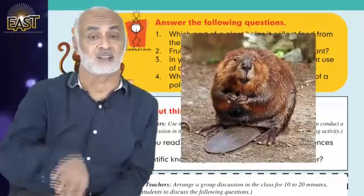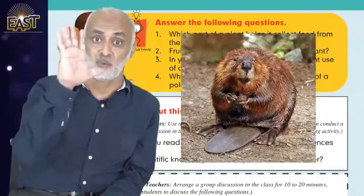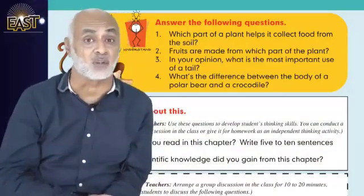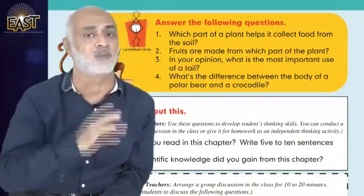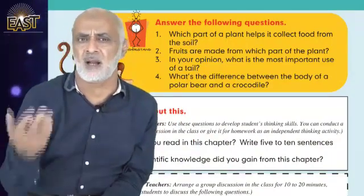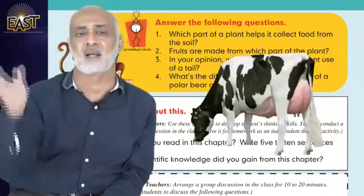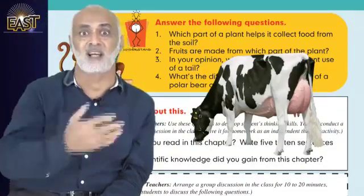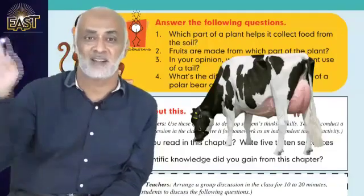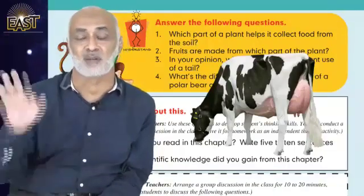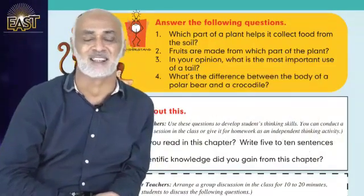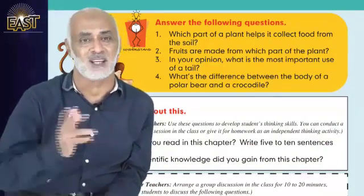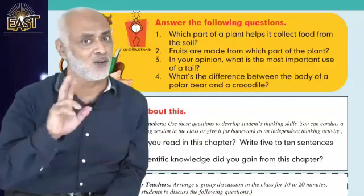What about the beaver? Its tail is flat like a spoon or a shovel — the kind used to lift soil. They use it to build houses. And cows use their tail to scare away flies and mosquitoes from their body. Now write in your copy one, two, or three interesting uses of a tail.